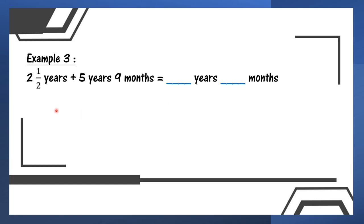Example 3: 2 and 1/2 years plus 5 years 9 months. The answer is in years and months. When you see a question like this, the first step is to compare the units first — bandingkan unit dulu. Tengok jawapan, dia nak years and months. So 5 years 9 months, you no need to change — sebab sudah dalam bentuk jawapan yang kita nak. Yang kita perlu tukar is 2 and 1/2 years.